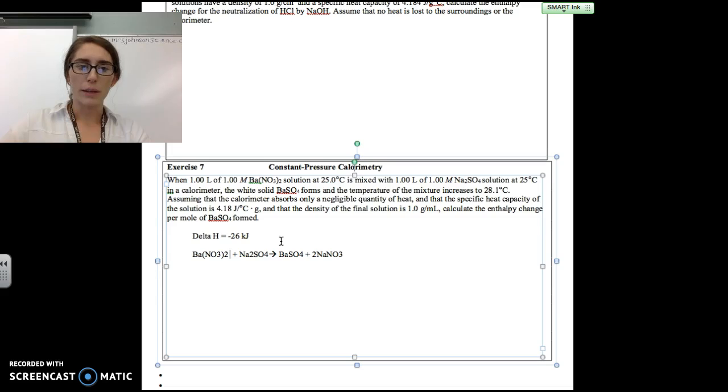For every 1 mole of barium nitrate and 1 mole of sodium sulfate, we get 1 mole of barium sulfate. Let's check how much of each reactant we had in the problem. We had 1 liter of 1 molar barium nitrate, which means 1 mole of barium nitrate. The other solution also had 1 mole reacting. So we don't have much stoichiometry to do because we had 1 mole of each reactant, giving us 1 mole of product.